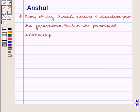Hello and welcome to the session. In this session we are going to discuss the following question which says that every sixth day Samuel receives four chocolates from his grandmother. Explain the proportional relationship.